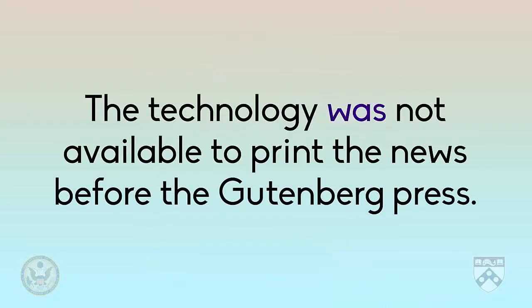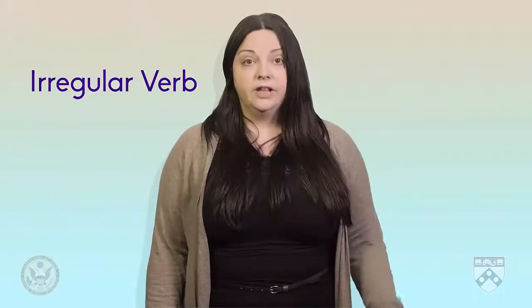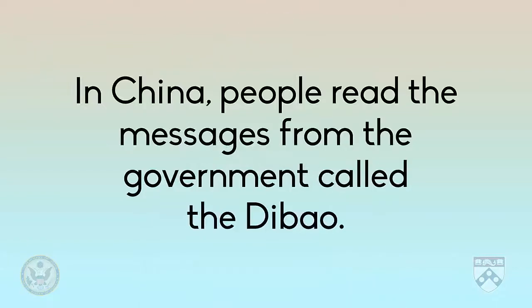You may notice that there are many verbs that do not take an -ed ending. For example, 'The technology was not available to print the news before the Gutenberg press.' In this sentence, the verb 'to be' is put in the past — this is an irregular verb. Here's another example: 'In China, people read the messages from the government called the Dabao.' Here, the verb 'to read' is in the past.